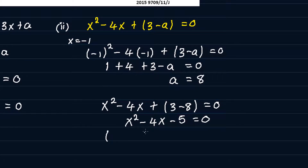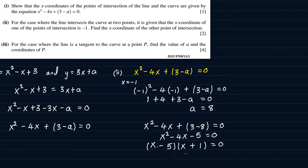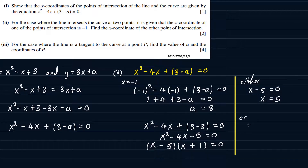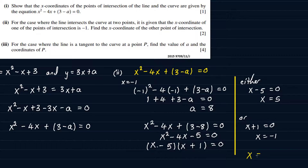Factorizing x squared minus 4x minus 5: we get factors of minus 5 as 5 and 1, giving x minus 5 and x plus 1. The two solutions are x minus 5 equals 0, giving x equals 5, or x plus 1 equals 0, giving x equals minus 1. The x equals minus 1 is the value the question already gave us, so the other x-coordinate required is x equals 5.